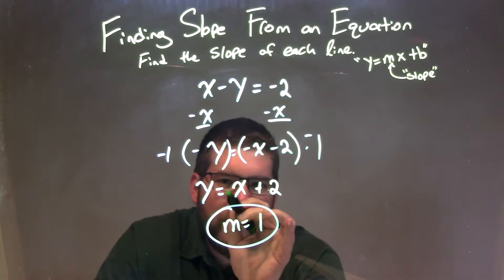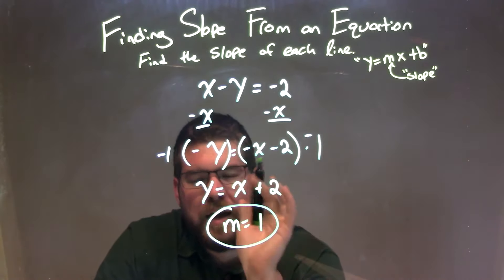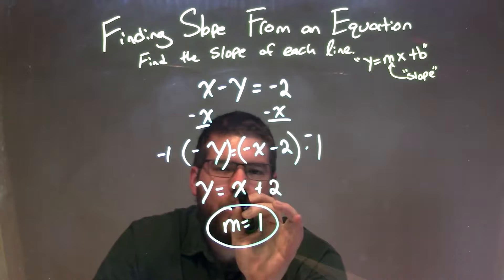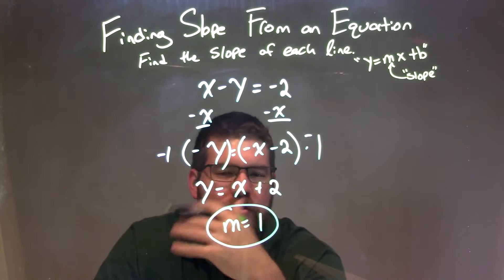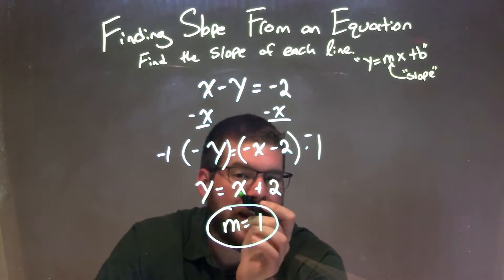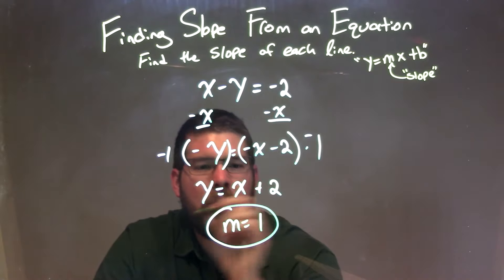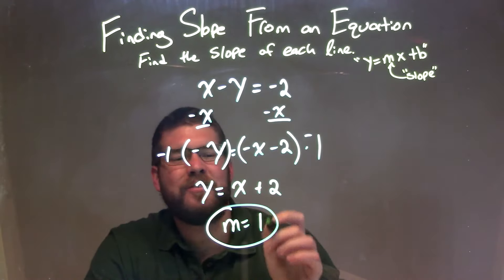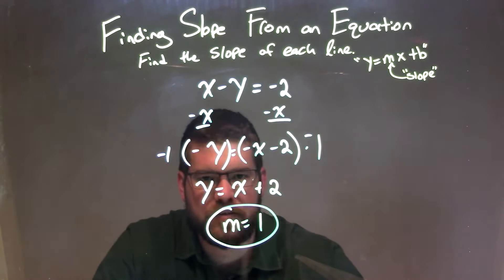And that's in our slope-intercept form, y equals mx plus b. So our m value is the coefficient of x. And this is tricky — when there's nothing written there, we assume there's just a 1 in front of x. So our m value here is just 1, and that is our slope and our final answer.